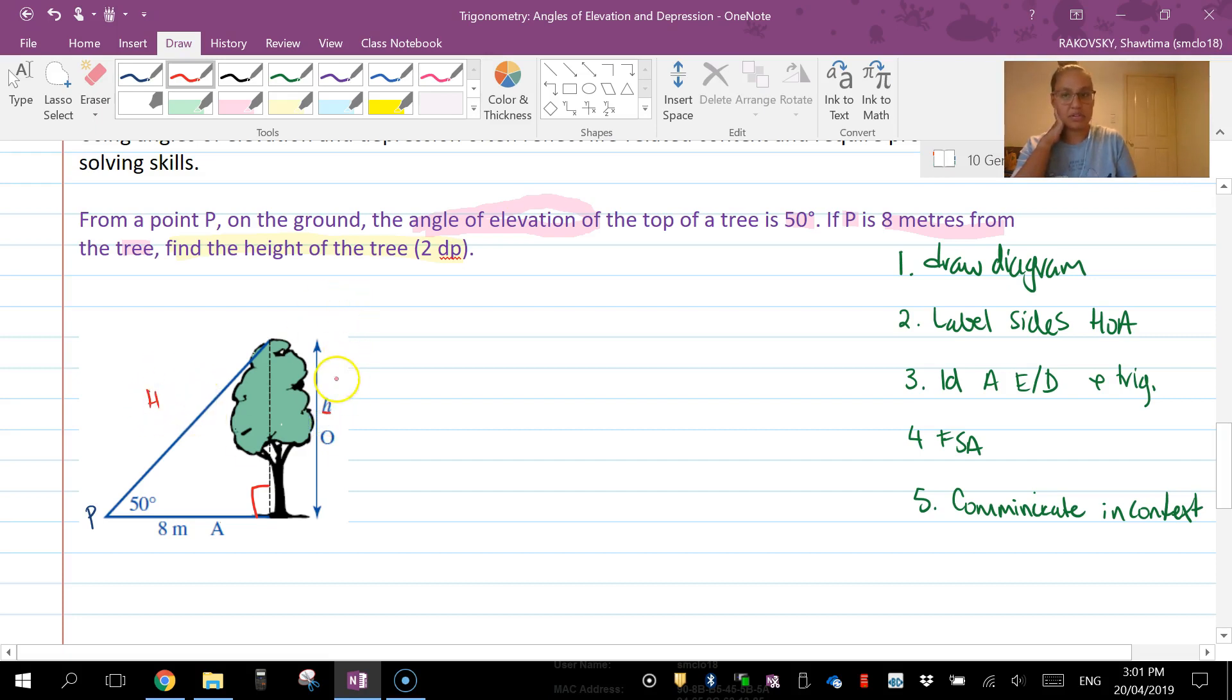Next we're going to do is identify. I've drawn a diagram, I've got a diagram, I've labeled the sides, I'm now going to work out this is an angle of elevation so it's all good. And what's my trig ratio?